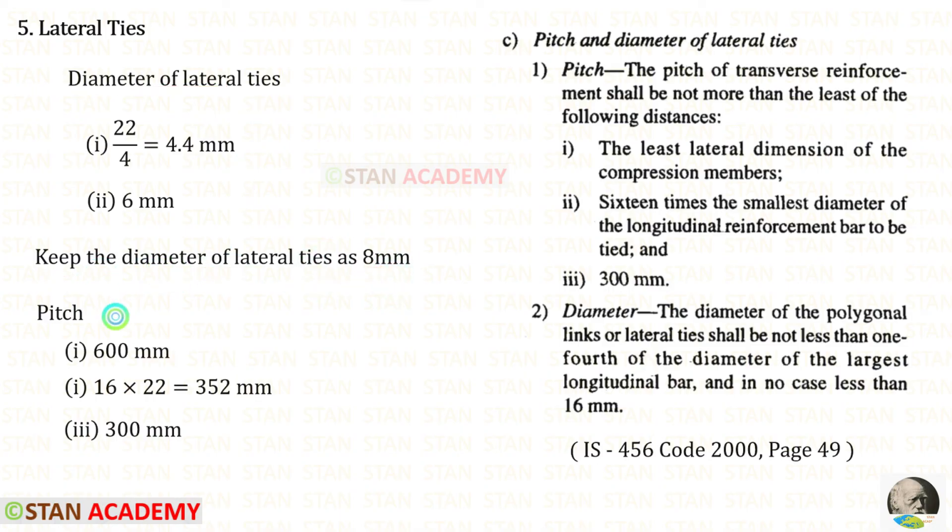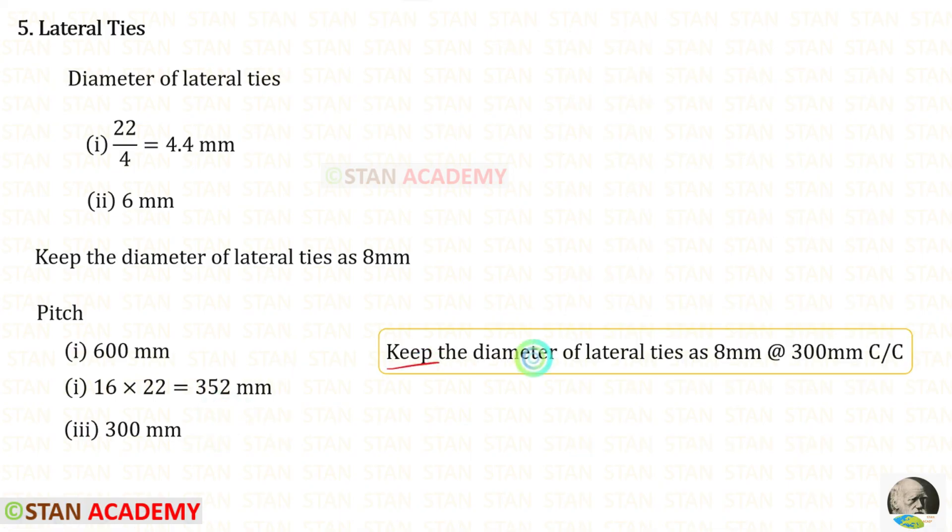Now let us design the pitch. The pitch of the transverse reinforcement shall be not more than the least of the following distances: the least lateral dimension of the compression member, 16 times the smallest diameter of the longitudinal reinforcement bar, finally 300 millimeters. From these three we have to select the minimum value, that is 300. Let us keep the diameter of lateral ties as 8 millimeters at the spacing of 300 millimeters.